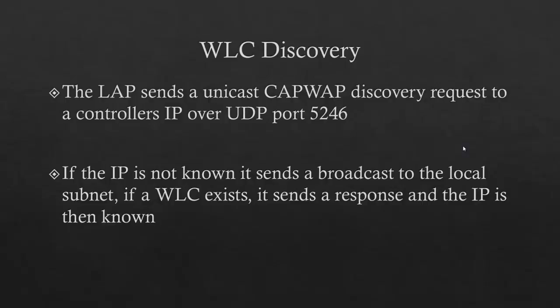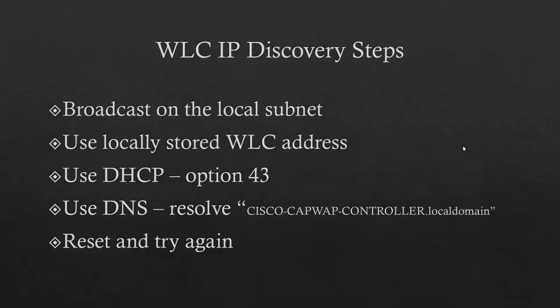There are several ways the lightweight access point can find a wireless LAN controller. It can broadcast on the local subnet, or you can hard code the wireless LAN controller address. You can also use DHCP option 43 to pull that information over. If none of those three options work, it goes to DNS and tries to resolve the name cisco-capwap-controller dot your local domain — that's the default DNS name for a wireless LAN controller. If none of those work, the wireless access point will reset and start the whole process over again until power is turned off or it finds a wireless LAN controller to associate with.